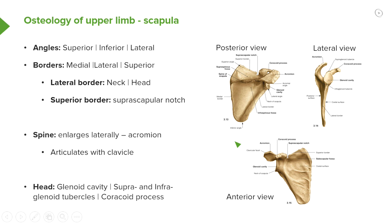There are three angles on the scapula: a superior, an inferior, and a lateral angle. Orientating ourselves on the posterior view, the superior angle at the top is connected to the inferior angle via the medial border. We can see this medial border of the scapula clearly. We also have a lateral angle, forming the three points of this triangle-shaped scapula.